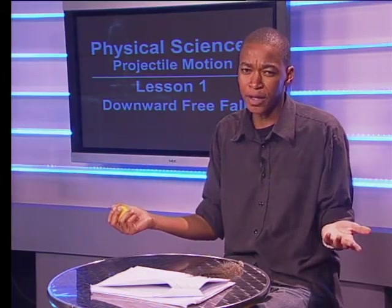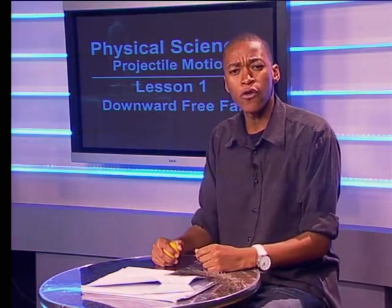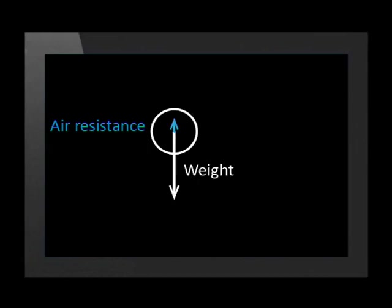But are we forgetting something? The feather is not in free fall. Free fall only happens when the only significant vertical force is weight. When the feather was dropped, there was another vertical force acting on it — air resistance pushed the feather in the opposite direction to its motion. So the feather was not in free fall and was not accelerating at the acceleration due to gravity g.